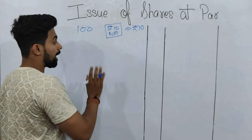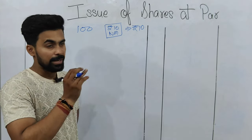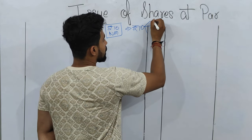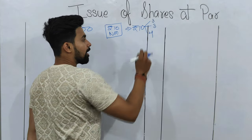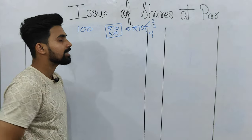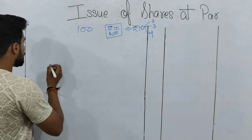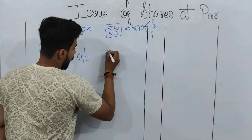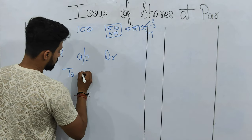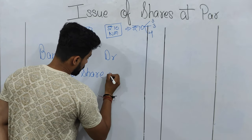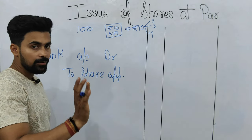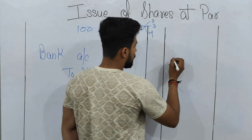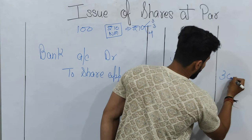The normal entry here is what we studied in basic entries. The call money is divided into three parts — three, three, and four. Three for application, three for allotment, and four for the first call. So the first entry at par will be: Bank account debit to Share Application account. The amount will be number of shares into call money — that is 100 into 3, which is 300 and 300.